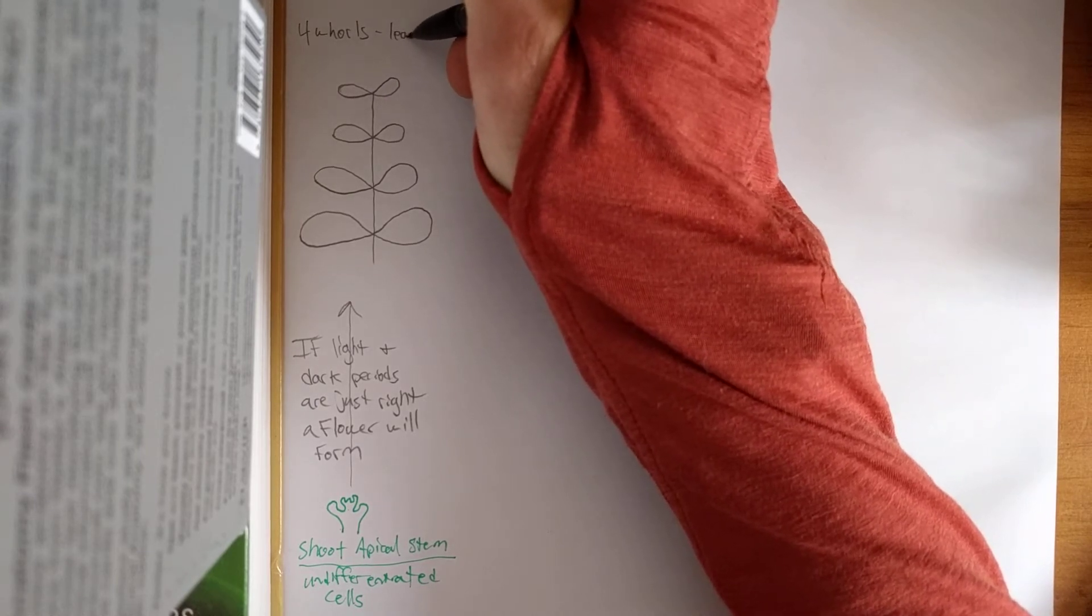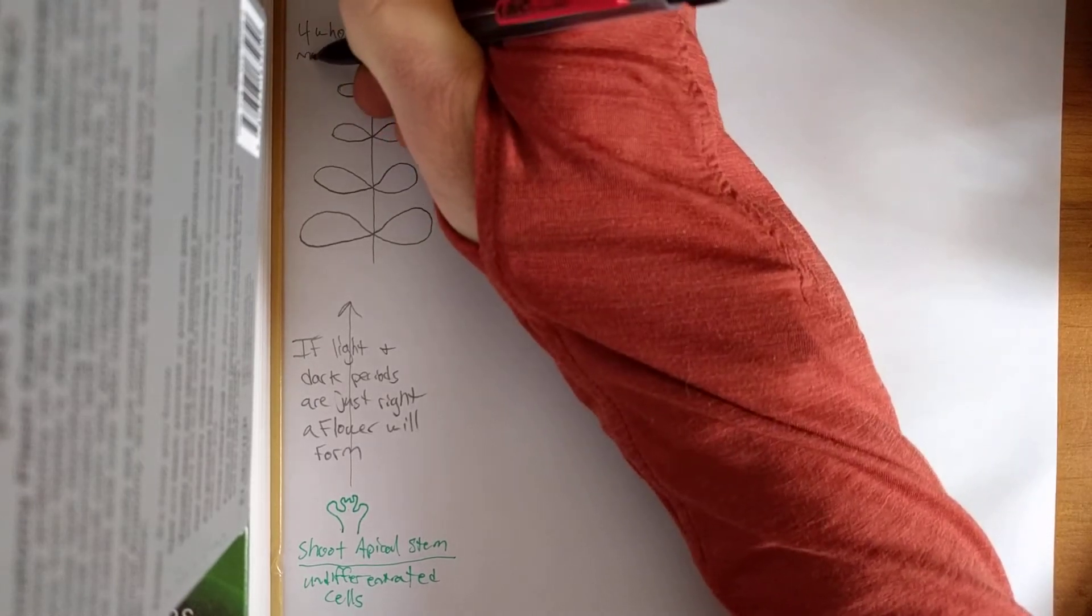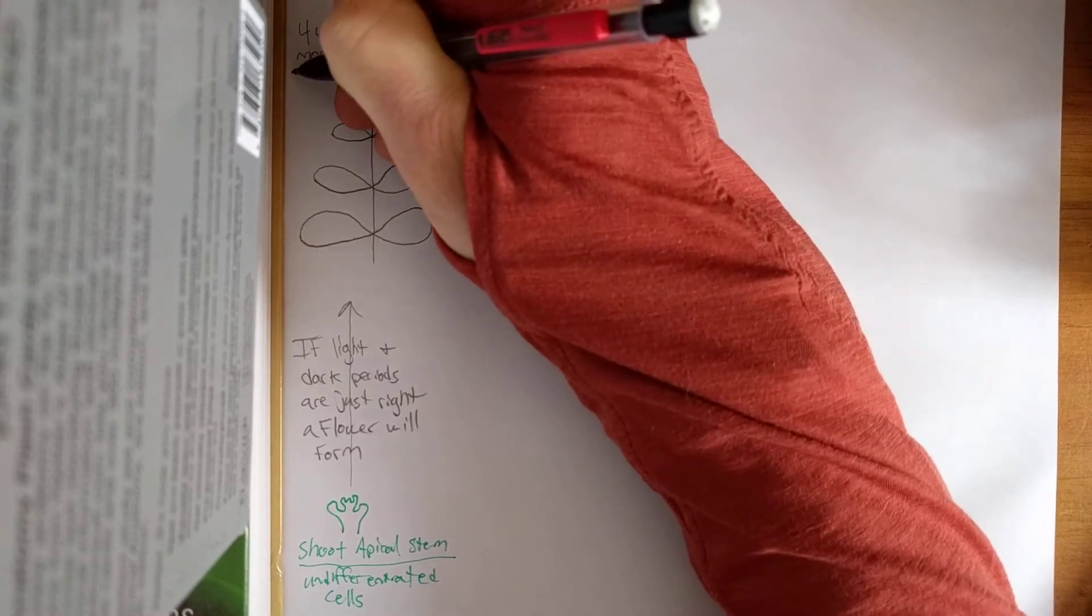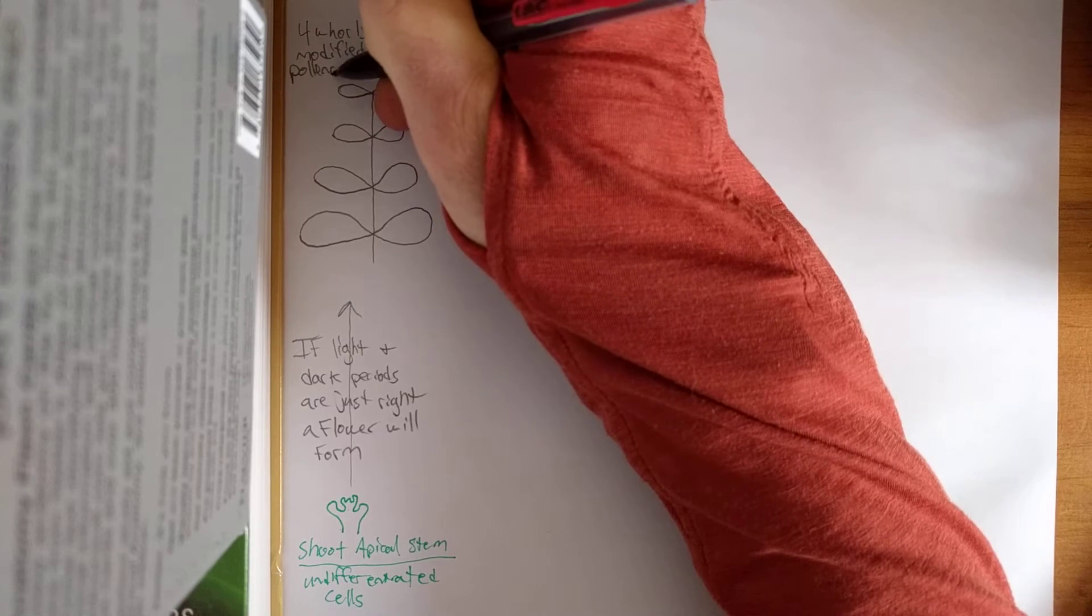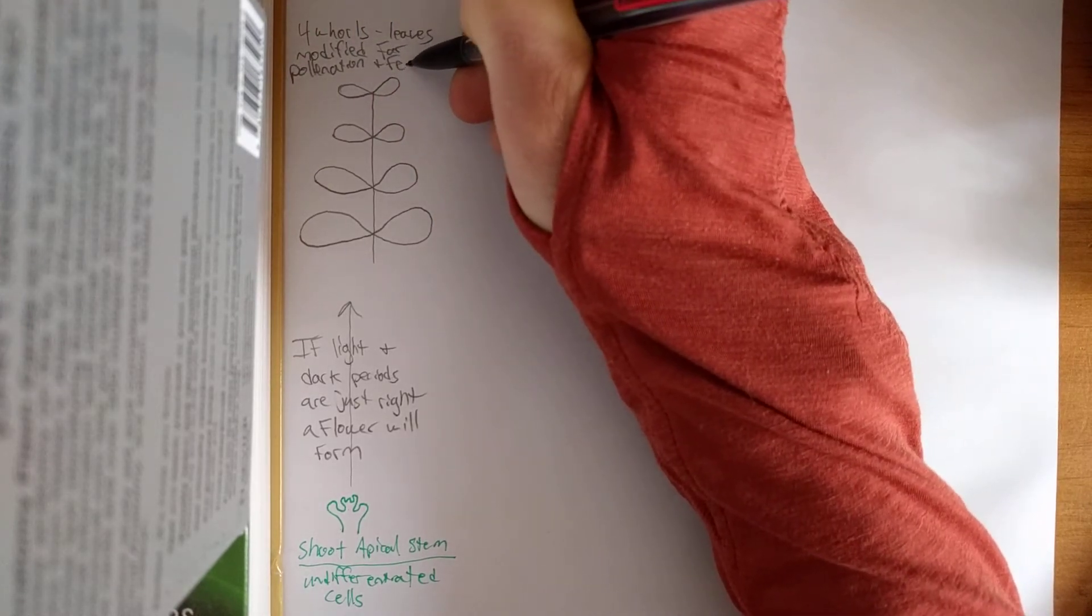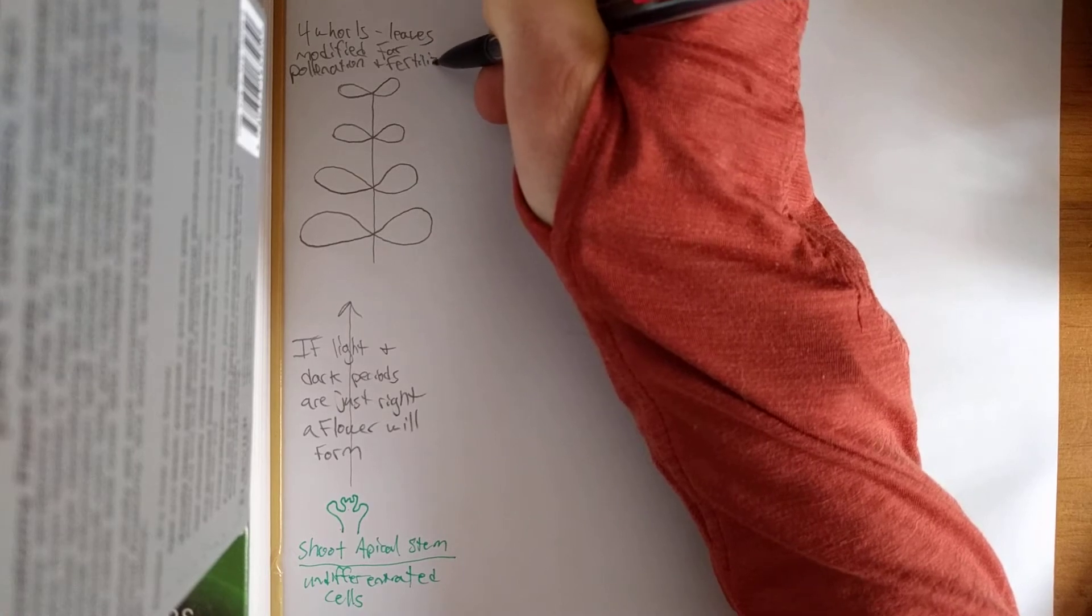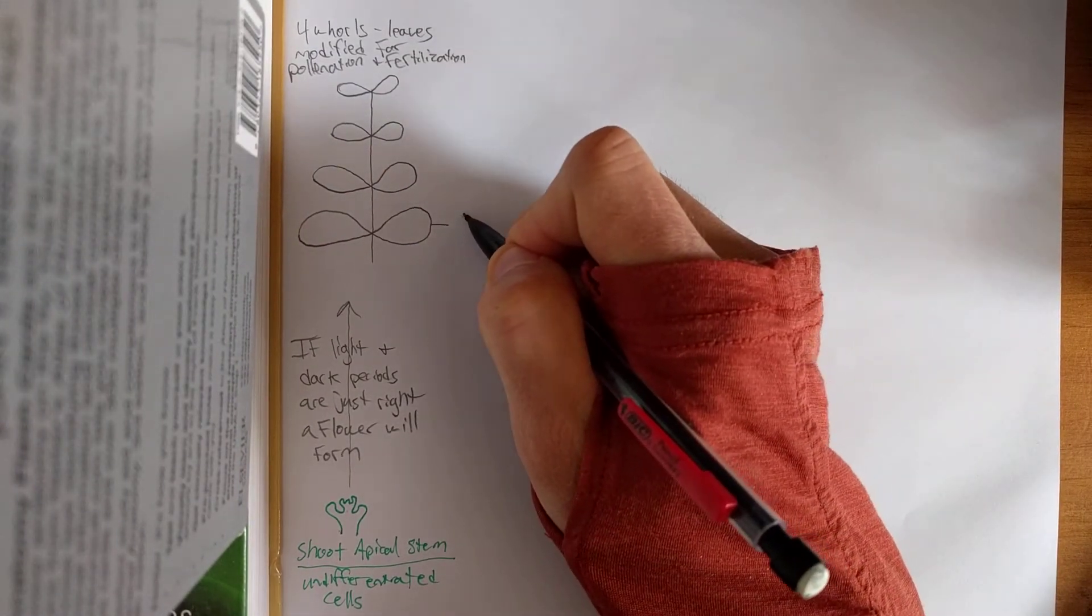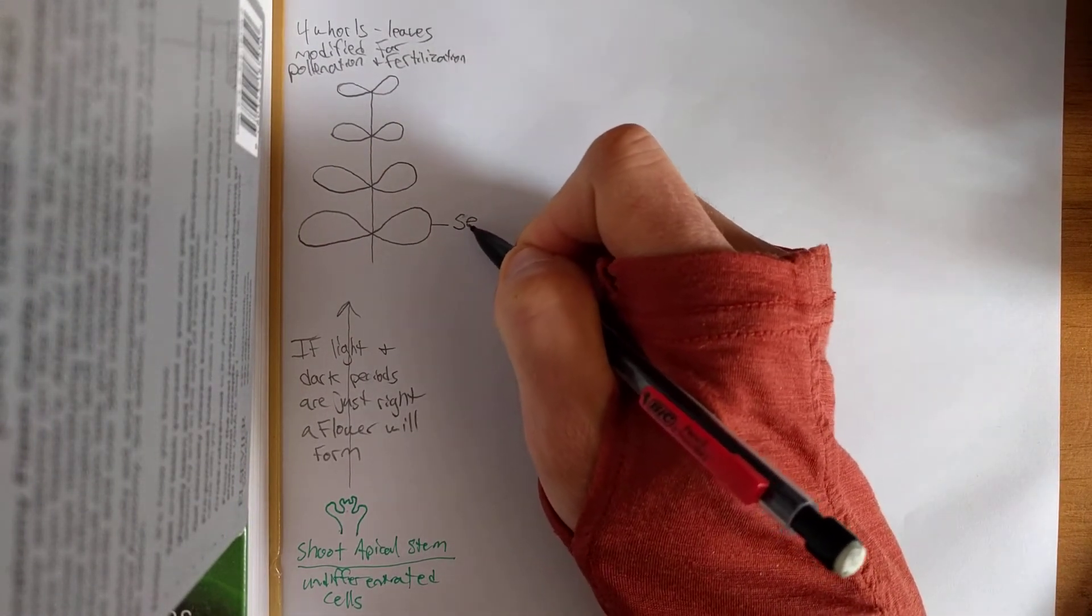These are leaves modified for really for pollination and fertilization. And for sexual reproduction, passing a pollen from flower to flower. Alright. The four whorls we see here.